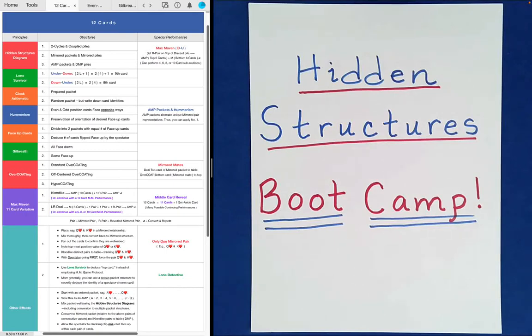Welcome back to the Hidden Structures Boot Camp Series. Today we will be looking at 12 card packets. And as we will see, 12 is a particularly nice value because of all of its wonderful divisors. 2, 3, 4, and 6 all divide evenly into 12. And that will give us tremendous power in the field of mathematical card magic, as we'll see. So let's get started.